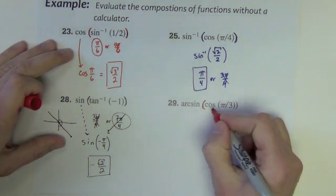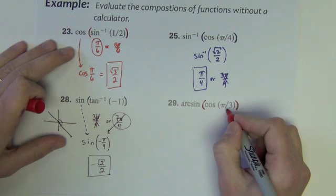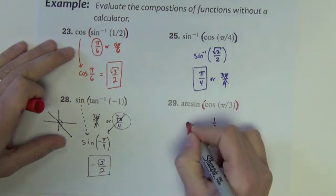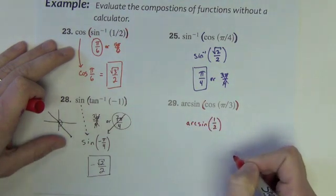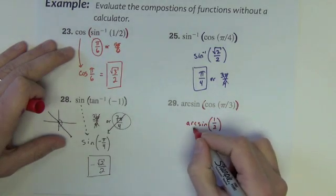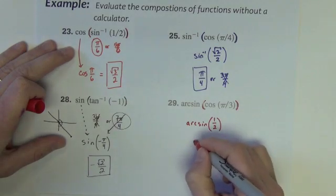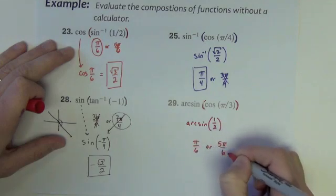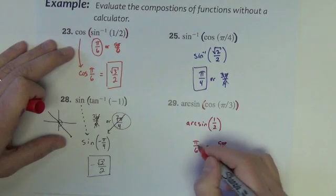Last one: sine inverse of cosine of pi over 3. Start inside — there's no inverse function, so just what's the cosine of pi over 3, which is the x value at pi over 3? That's 1 half. Now I want the arc sine of 1 half — where on the circle do we find y values of 1 half? It happens at pi over 6 or 5 pi over 6. We throw out the 5 pi over 6, and the answer is pi over 6.